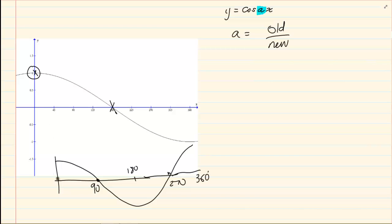On the first coordinate we have 0 and 1, but I am not interested in that one. What I am interested in is on the second one. The old one is 90 but the new one is 180. So my a is going to equal to a half.